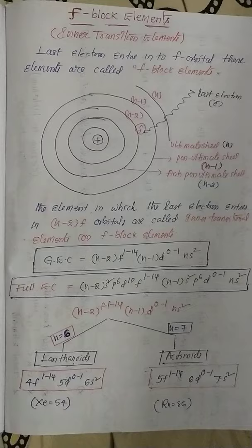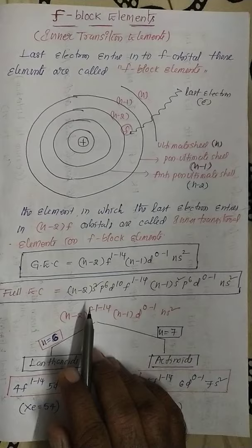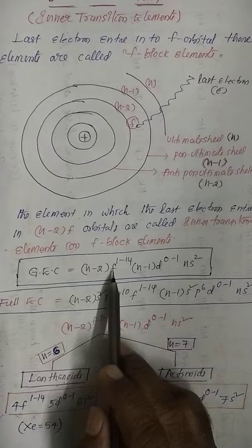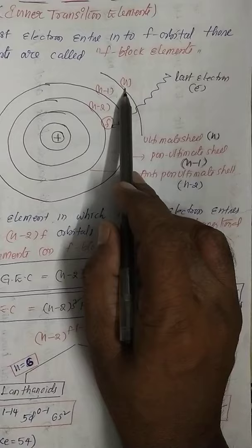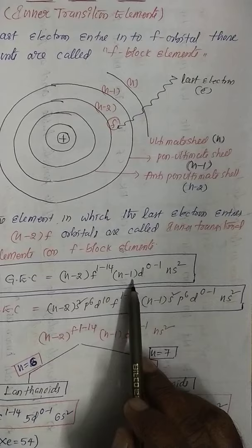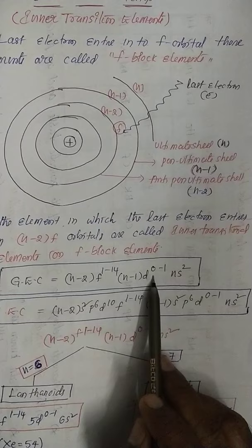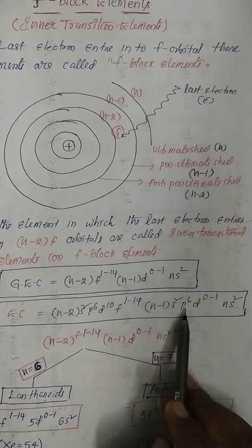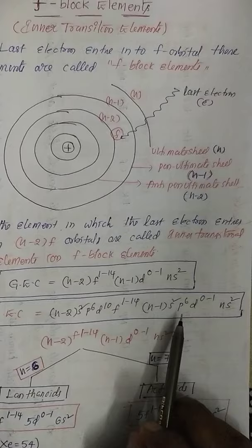Sometimes in competitive exams, they ask for the full-fledged electronic configuration of F-block elements. In the last shell, Ns² as usual. In the penultimate shell (n minus 1), s-orbital has 2 electrons, p-orbital has 6 electrons, and d-orbital has 0 or 1 electron. Before the F-orbital in the ante-penultimate shell, the s, p, and d orbitals are completely filled.